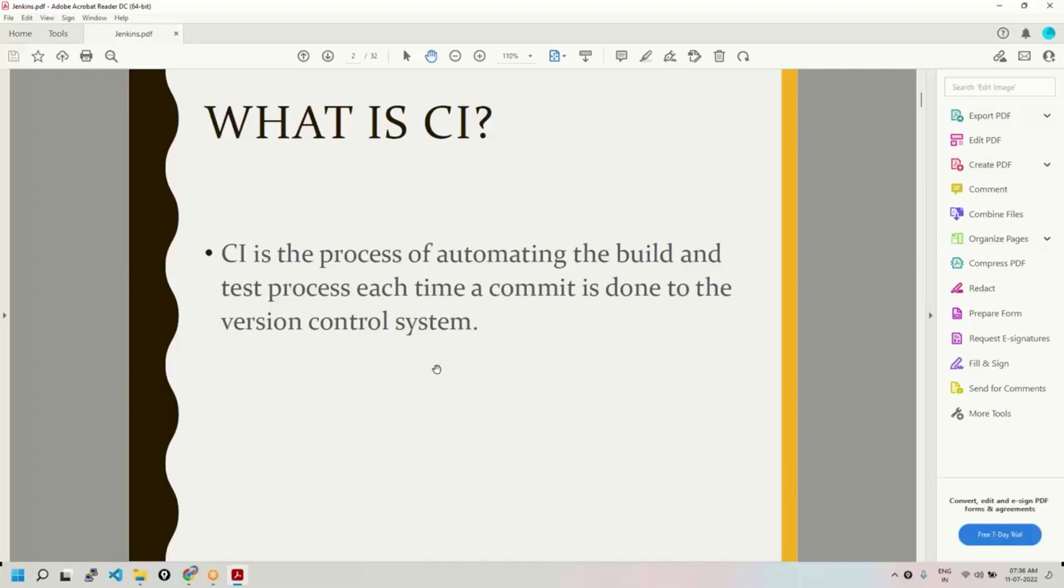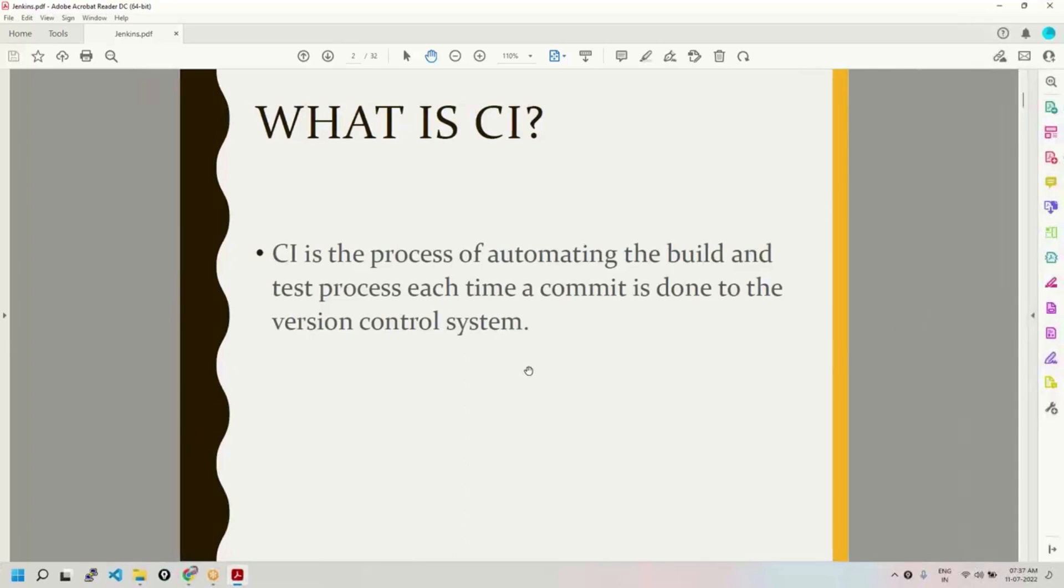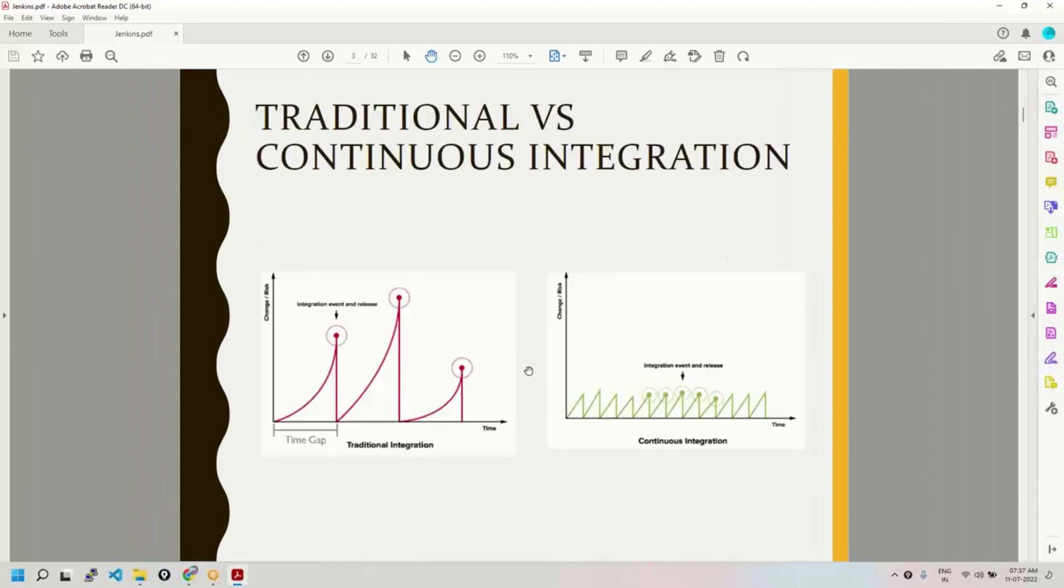So whenever there is a new code commit, whenever developers make any change, it will be pulled, built, tested, and then deployed from lower environment to higher environment. This process keeps on continuing, which is called continuous integration. There are so many continuous integration tools.